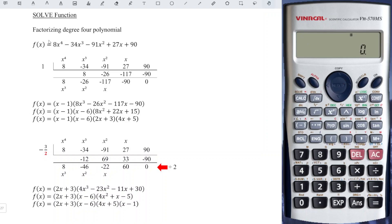First, we key in the function that is given. So we have 8x to the power of 4 minus 34x to the power of 3 minus 91x squared plus 27x plus 90.